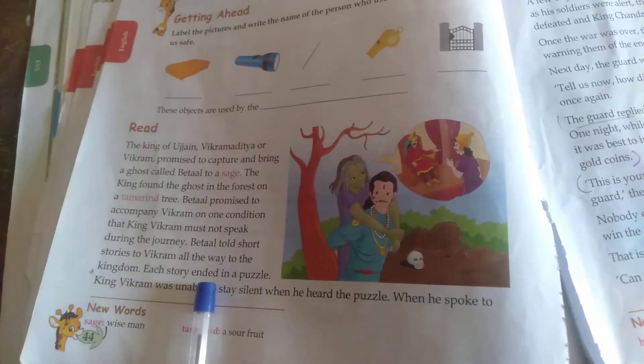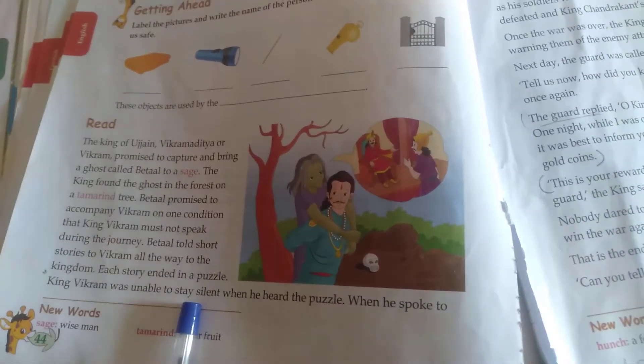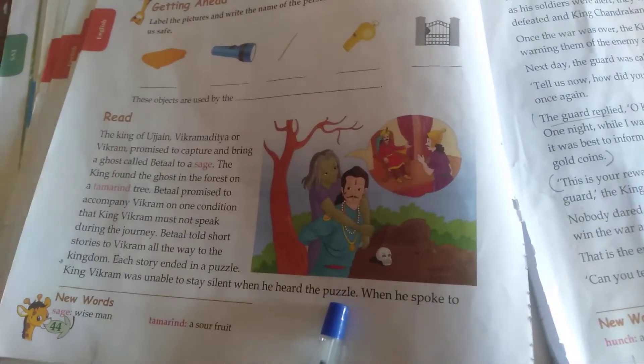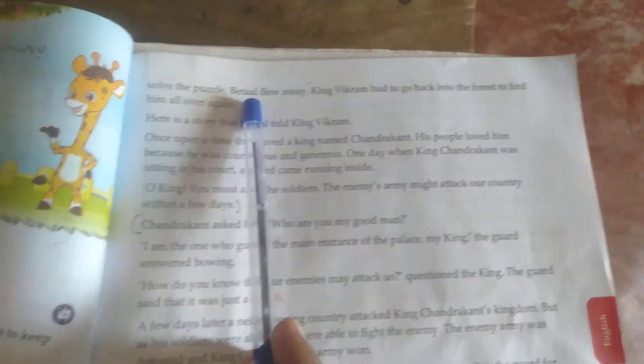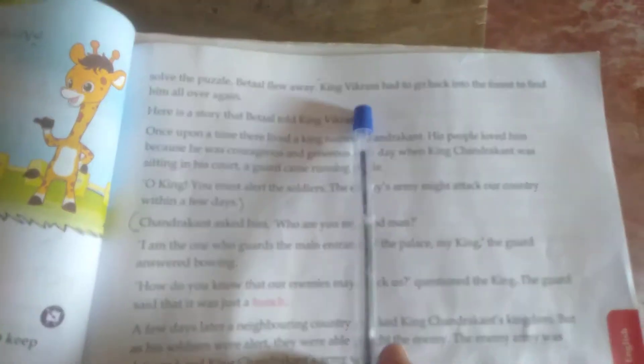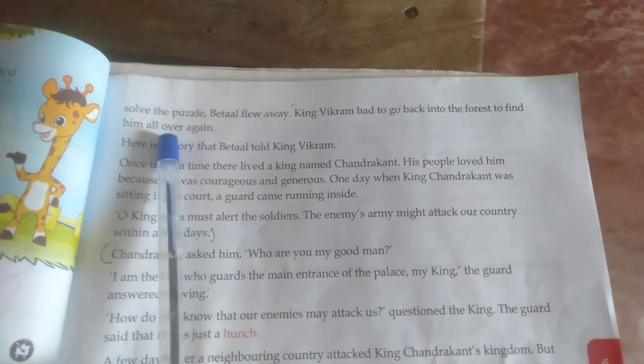Each story ended in a puzzle. King Vikram was unable to stay silent when he heard the puzzle. When he spoke to solve the puzzle, Betal flew away.